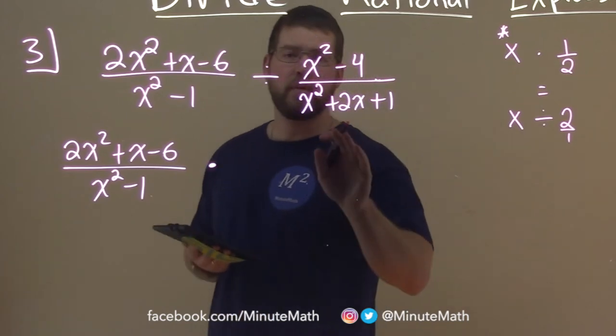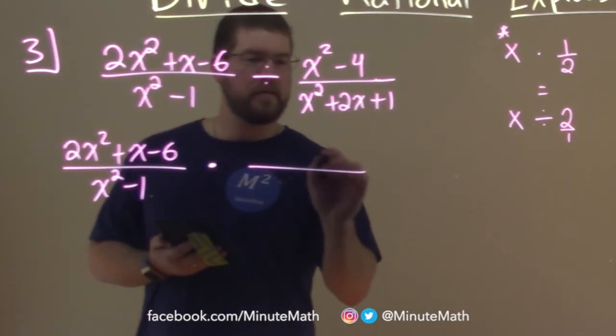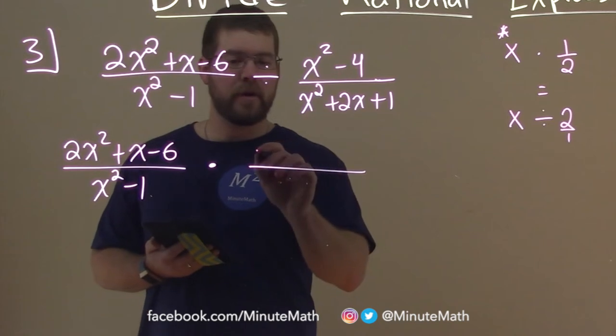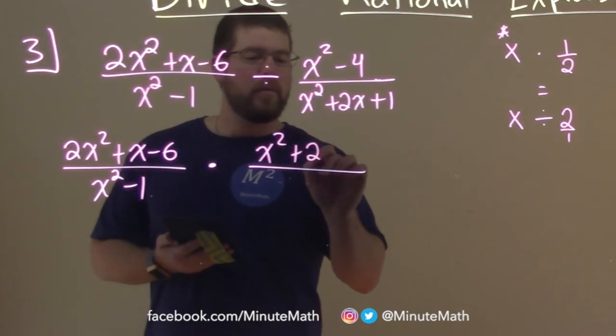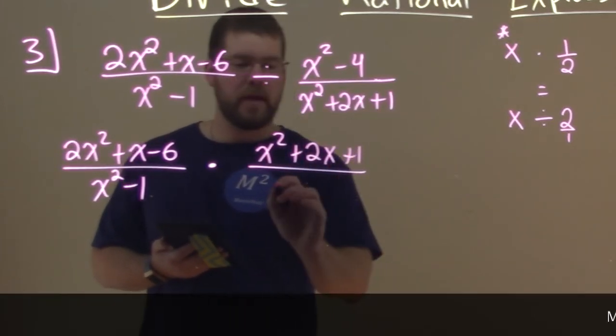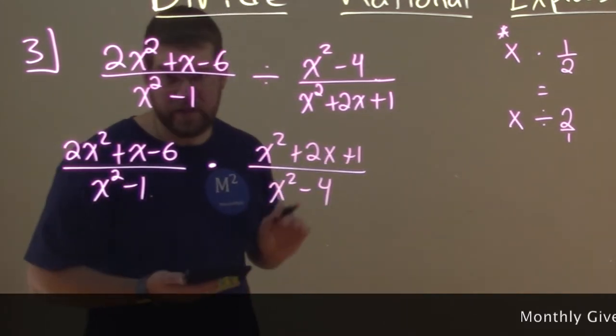So what we're going to do here with our expression is flip it. Take the denominator and make it the numerator: x squared plus 2x plus 1, and then x squared minus 4 in the denominator.